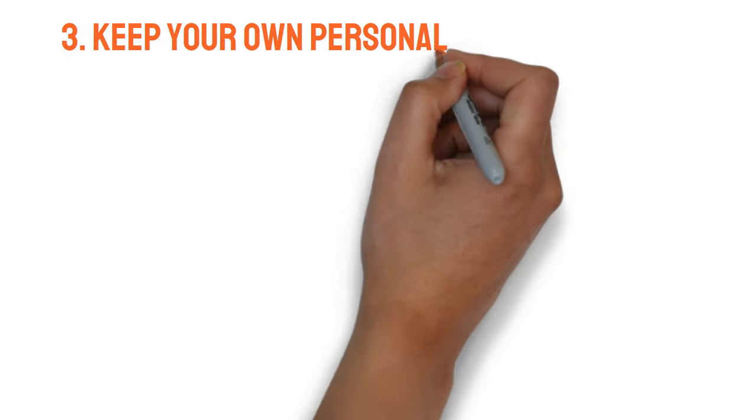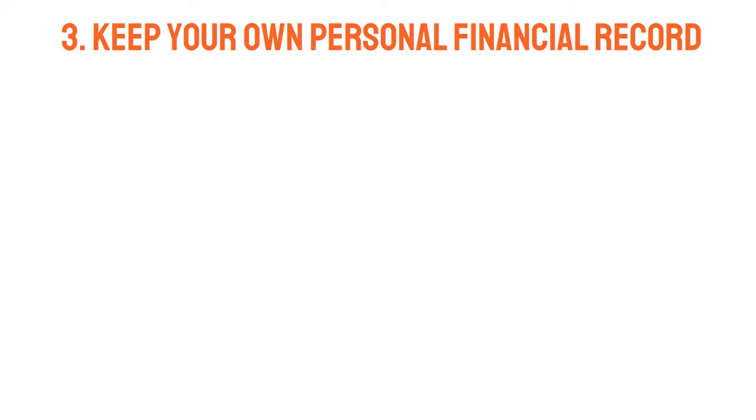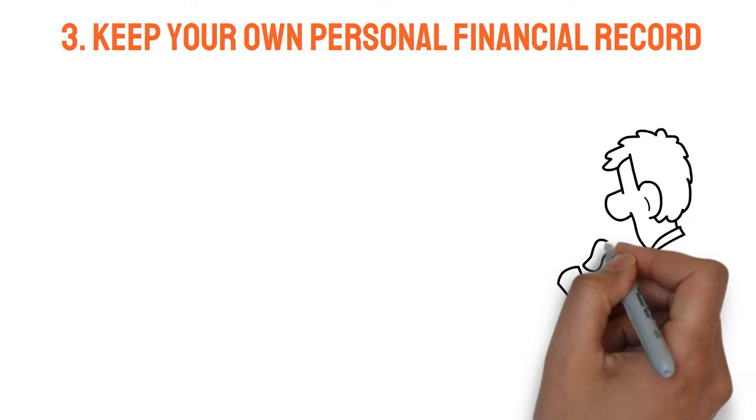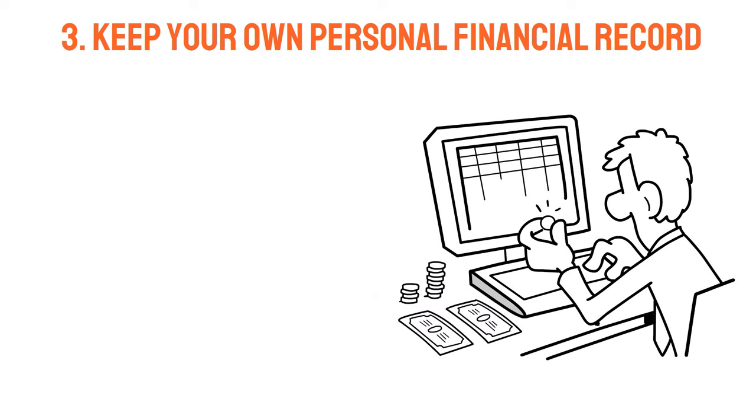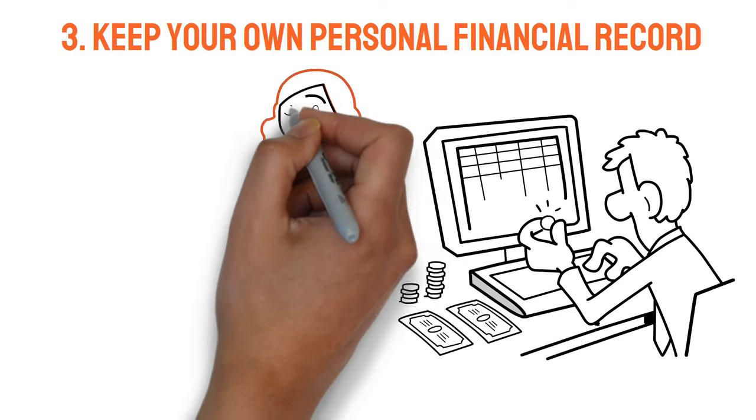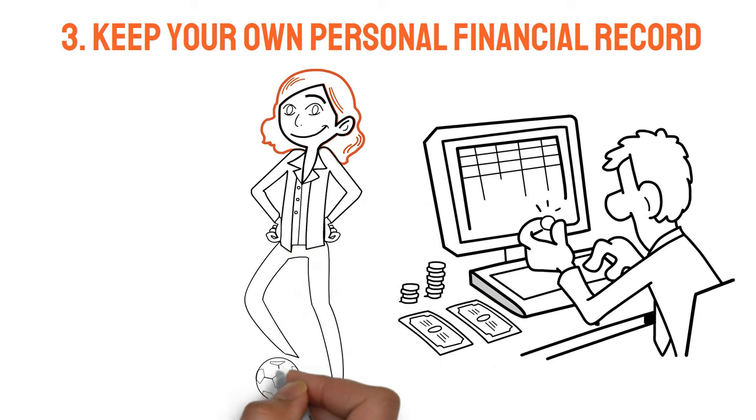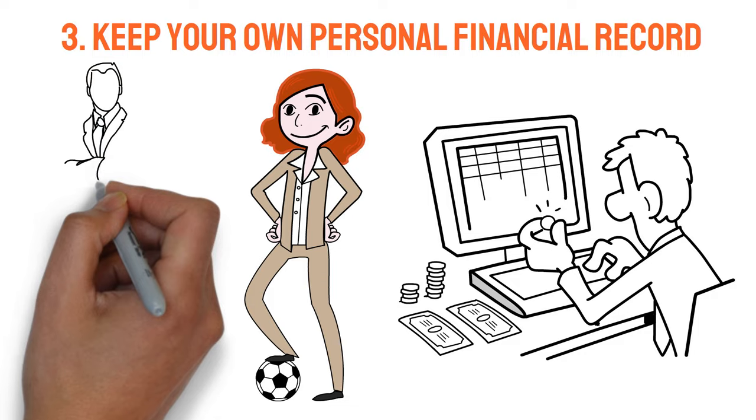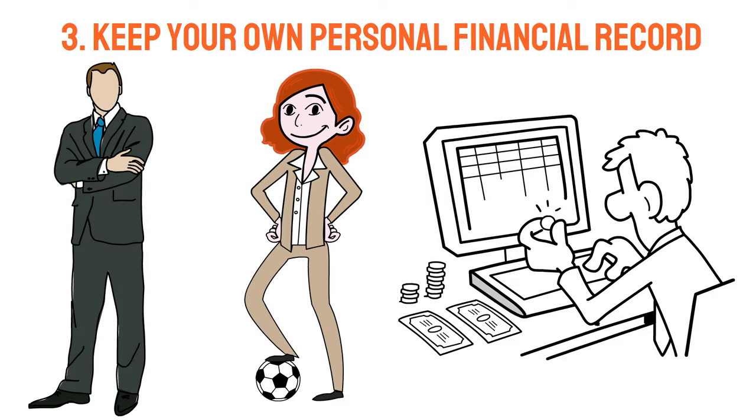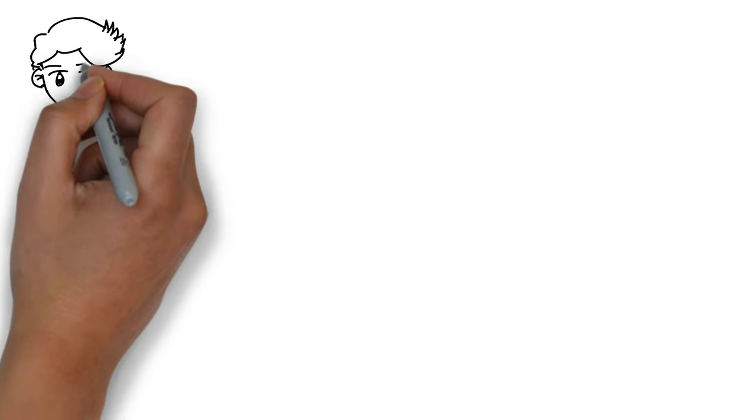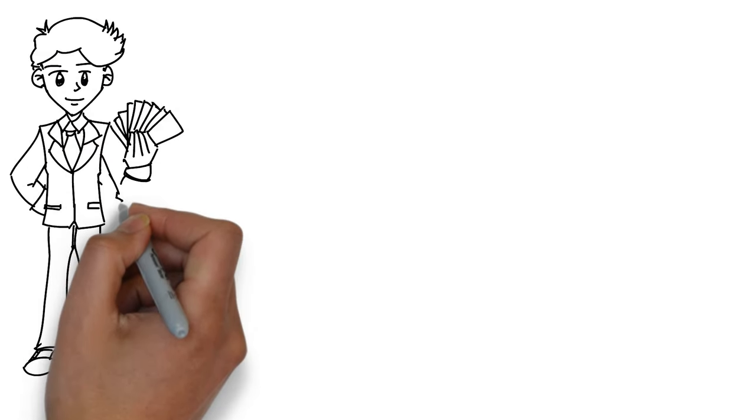Rule 3: Keep your own personal financial record. One useful tool for keeping track of one's assets and liabilities is a personal balance sheet. It's a potent instrument for elevating your financial situation. The purpose of this document is to allow you to record your assets and obligations. Your net worth is the amount by which your assets are less than your liabilities.